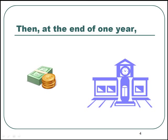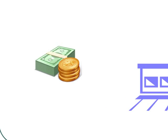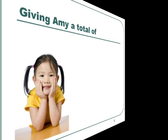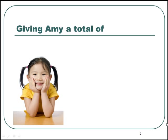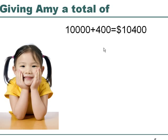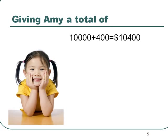Then, at the end of one year, the bank adds the interest of 0.04 times 10,000, which is $400, to her $10,000 account, giving Amy a total of $10,000 plus $400, which is $10,400.